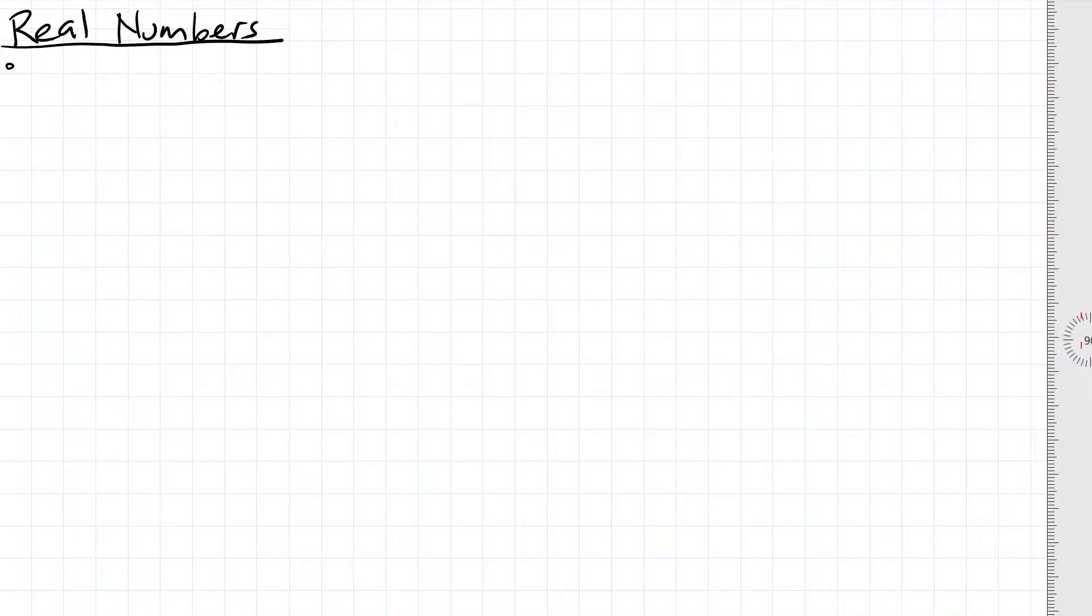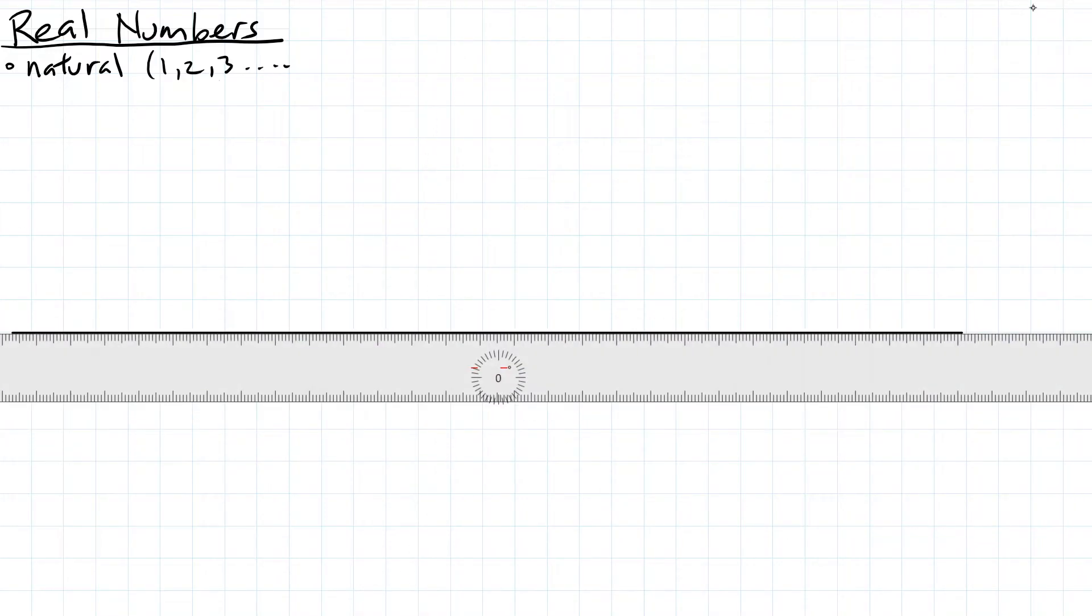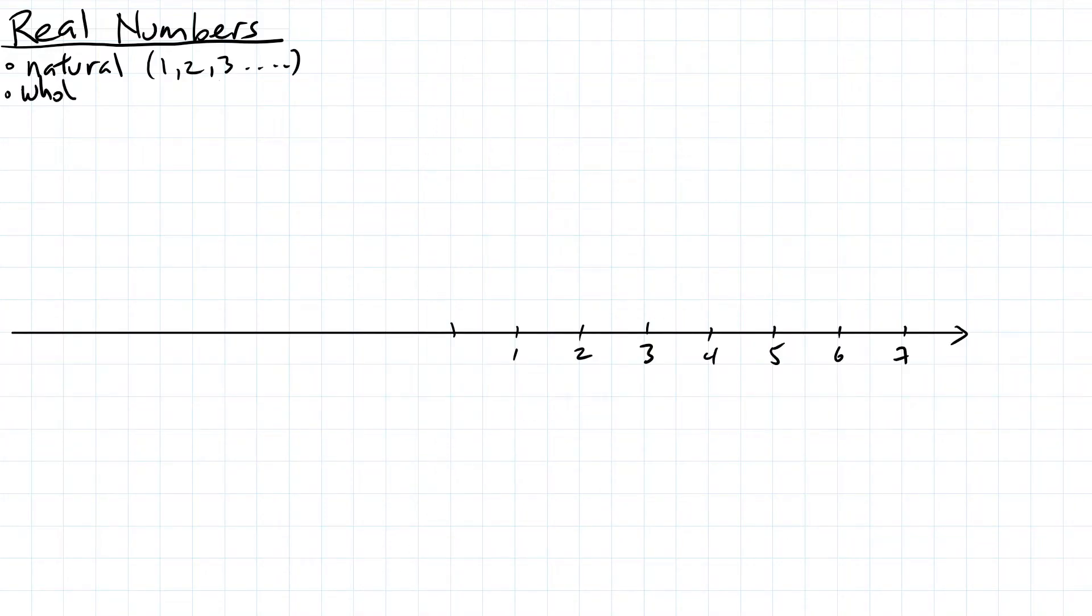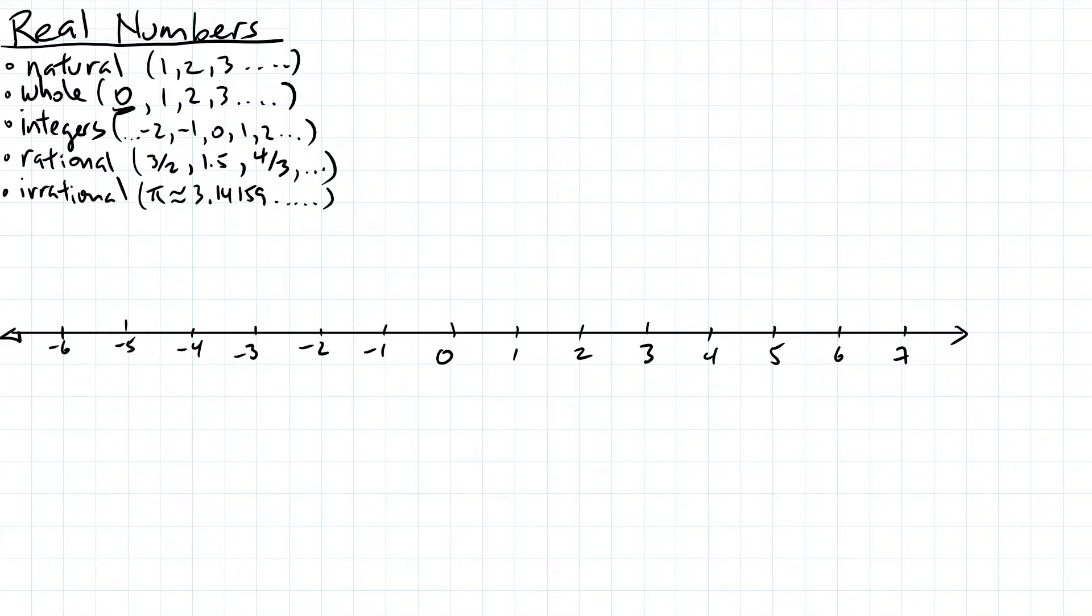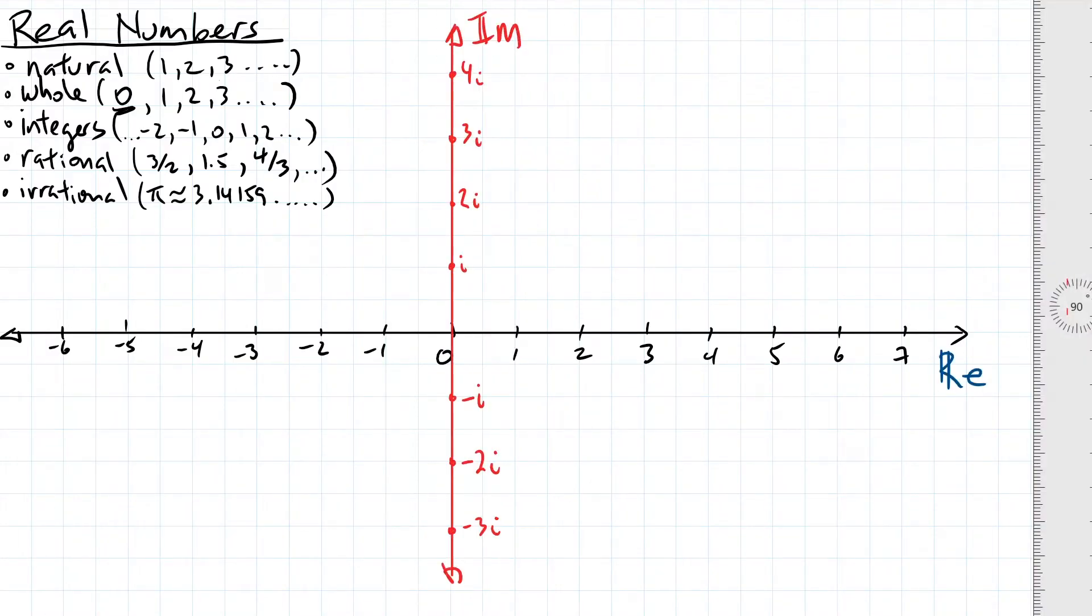The type of numbers that were covered so far are known as real numbers. This includes natural numbers, whole numbers, integers, rational, and irrational numbers. This is just a one-dimensional number line. But it is possible to have numbers not lie on this number line. Just like how a piece of paper isn't one-dimensional, the number line isn't one-dimensional either. It is possible for numbers to float completely away from this real number line.